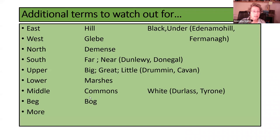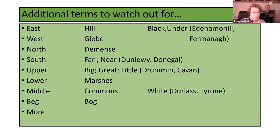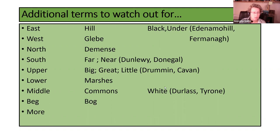There are many additional terms that can be attached to a townland name. The more common ones are East, West, North, South, Middle, and Lower, but there's also Hill, Glee, Domain, Far, Near, Big, Great, Little, Marshes, Common, and Bog. In northern counties particularly, the descriptions Black, Under, and White also appear. It's important to be aware that if you can't find just a single name, there's always the option that it potentially has a further descriptive term attached.